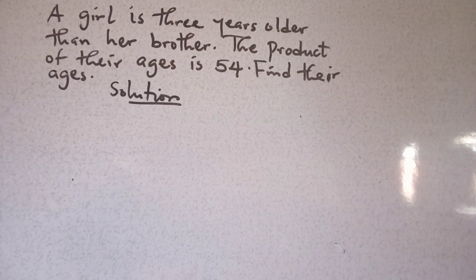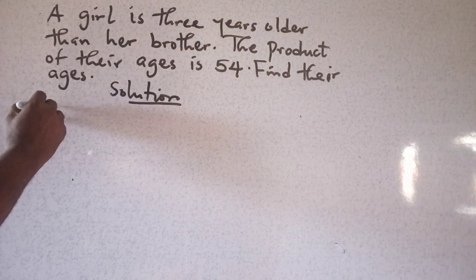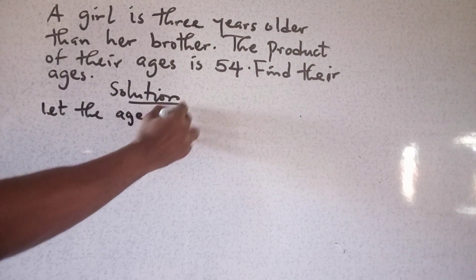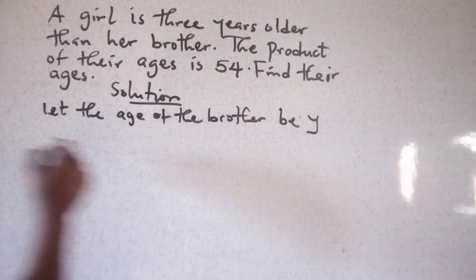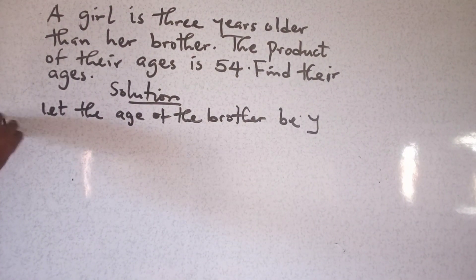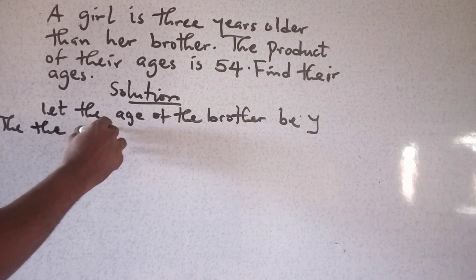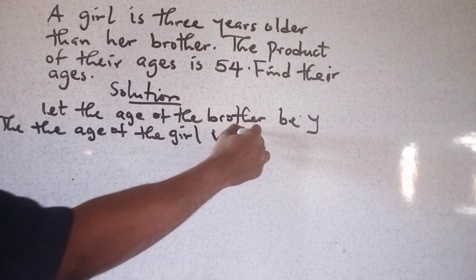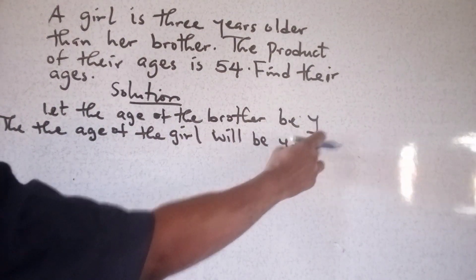A girl is three years older than her brother. The product of their ages is 54. Find their ages. Let the age of the brother be Y, and the age of the girl will be Y plus three.